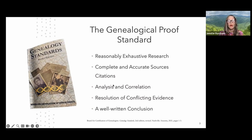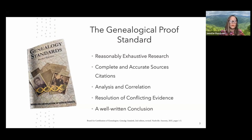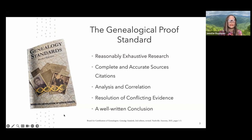We'll talk about locality and jurisdictions — what they are and how we use them in our research — as well as locating surviving sources and recreated sources. We'll also go over the case study of two men in Kentucky and Tennessee who both originated from North Carolina, with record loss everywhere.